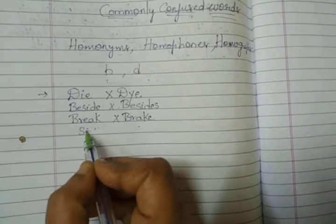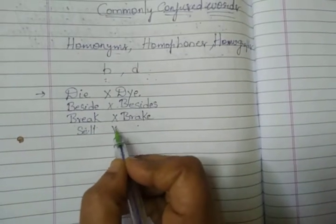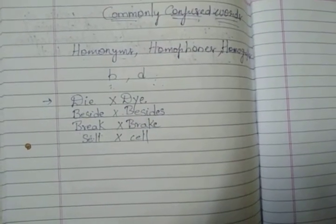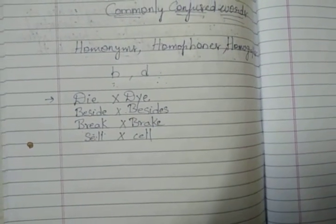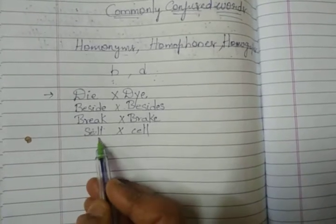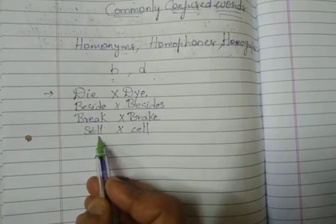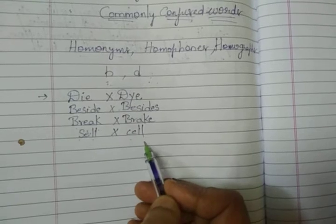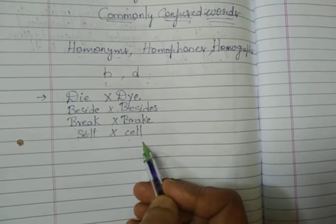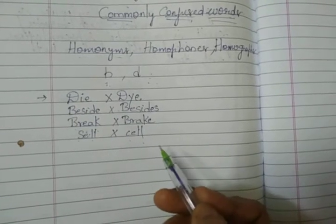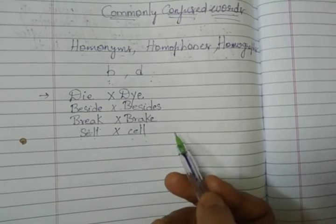Next: 'cell' and 'sell'. For example: 'She tried to sell her old phone' — that is S-E-L-L, sell. And C-E-L-L, cell — that is our cell phone, our mobile. For example: 'She forgot her cell phone on the table.'